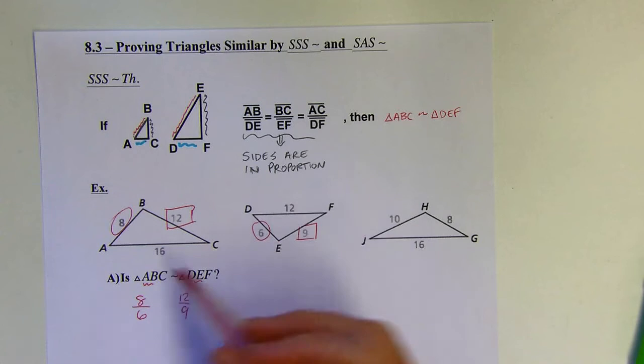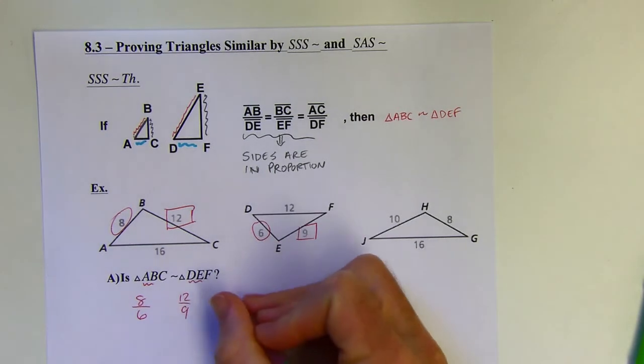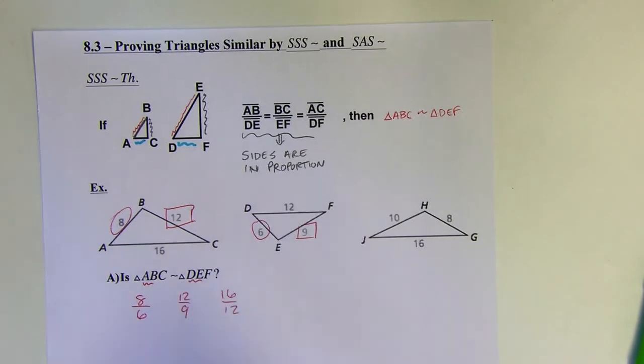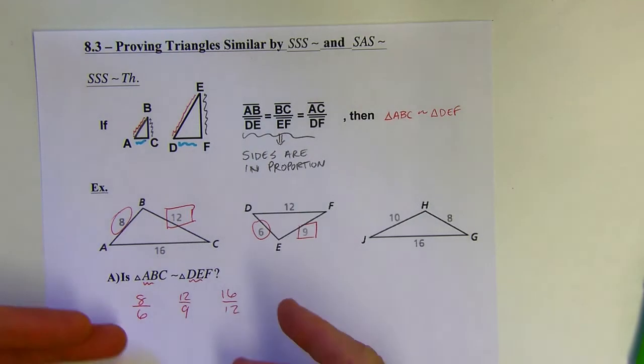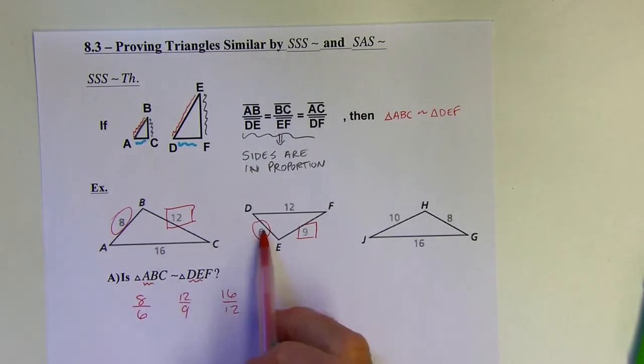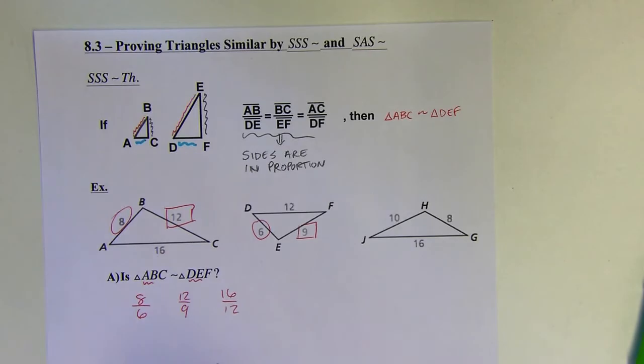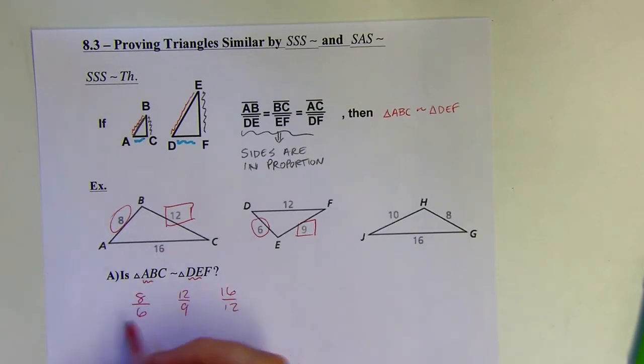And then 16 and 12 are the remaining ones. So what I want to do is see if these three fractions are equivalent. A number of ways you can do that, easiest way, I think, is just to reduce all three of them, and if they're equal, then they're equivalent. You could put them into a calculator as well. You could have all three of these fractions flipped upside down, but it doesn't really matter.